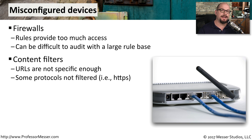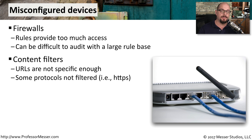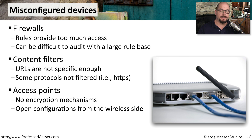Other devices may not provide enough configurations. For example, a URL filter may not provide a specific enough URL to provide blocking, and in some cases the URL filter might not block anything using a particular protocol such as HTTPS. On our wireless access points, we need to make sure that we provide the proper encryption mechanism so that all data going over the wireless network is encrypted, and make sure that the protections for managing the device prevent access to the management console from the wireless side.